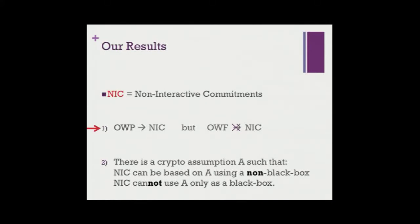Our first result: it is known that one-way permutations can be used to obtain non-interactive commitments, but we show that you cannot use general one-way functions to get non-interactive commitments via black-box constructions. For this application, these two primitives start to behave differently. Our second result: there is a cryptographic assumption you can use to obtain non-interactive commitments, but you have to use it in a provably non-black-box way — you cannot do it black box.